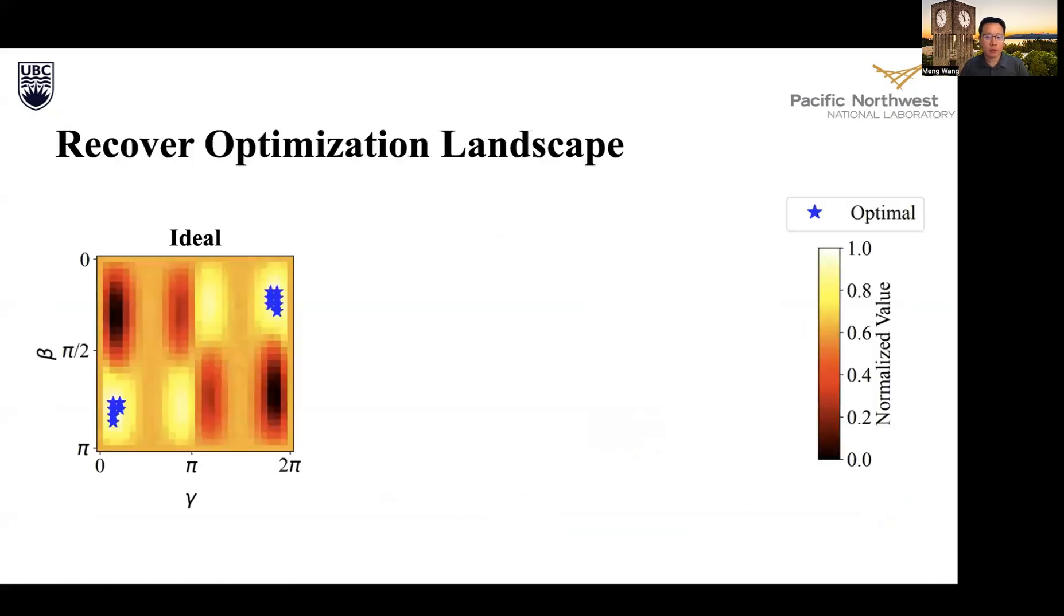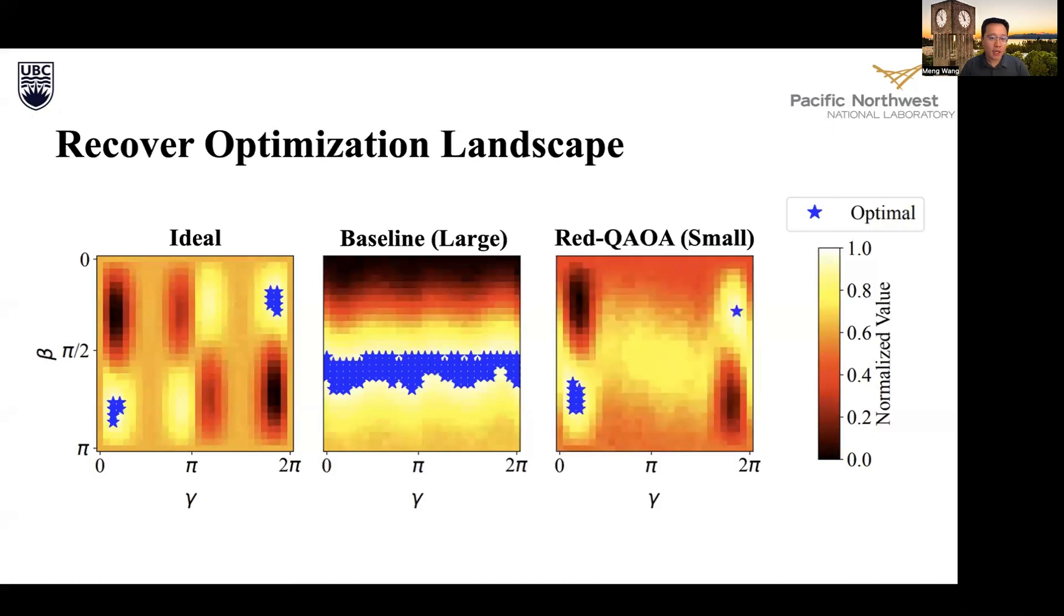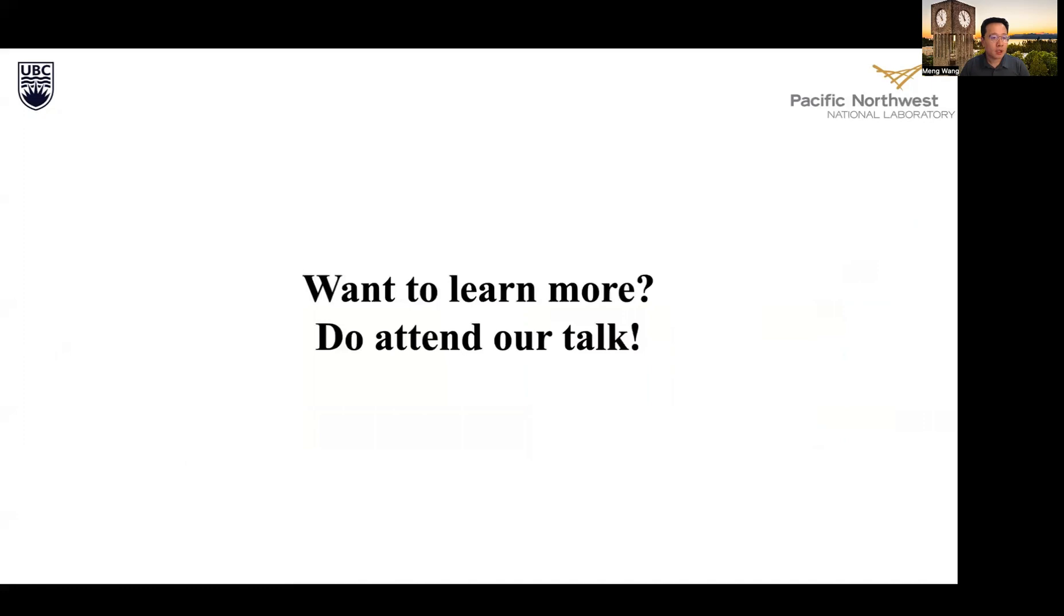Red QAOA is proposed to mitigate this issue. By constructing a reduced graph that preserves the core characteristics of the original optimization landscape, we obtain a compact structure that is substantially more resilient to noise. Want to see exactly how Red QAOA works? Please do come to our talk. Thank you.